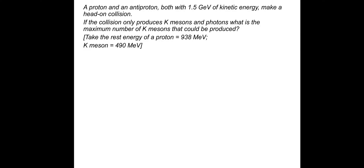Just some practice. A proton and an antiproton, both with 1.5 giga electron volts of kinetic energy, make a head-on collision. If the collision only produces k-mesons and photons, what is the maximum number of k-mesons that could be produced? The rest energy of a proton is 938 mega electron volts and a k-meson is about 490 mega electron volts. Pause and then I'll take you through the answer.